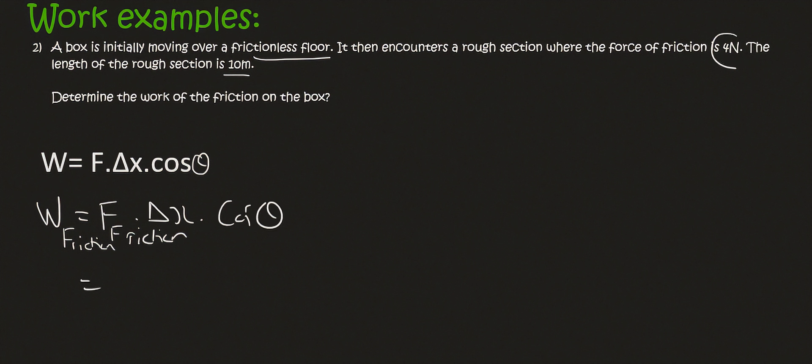So the force of the friction is 4 newtons. Now I know that that's going against the object, but you don't say minus 4 over there. Then the distance that we're moving is 10 meters. Now if you have a box that's initially moving over a horizontal floor, it's busy moving to the right.